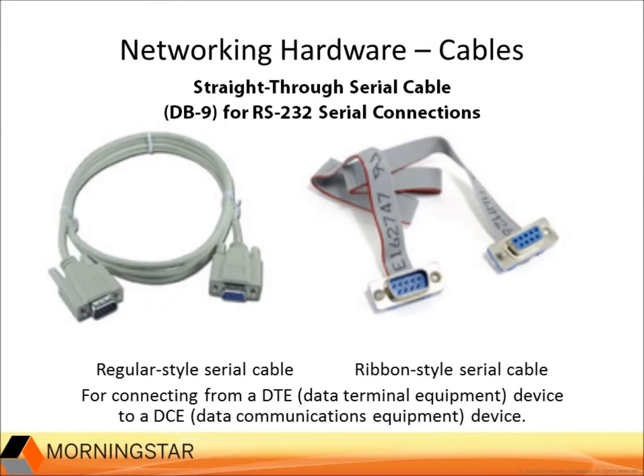The remainder of this presentation will be about communications hardware. The most basic piece of hardware needed for every communications configuration are the cables. It is important to have the right cables. Here are the RS-232 DB9 9-pin straight-through cables. The ribbon style is good for fitting into tight spaces like inside the TriStar and TriStar MPPT enclosures.